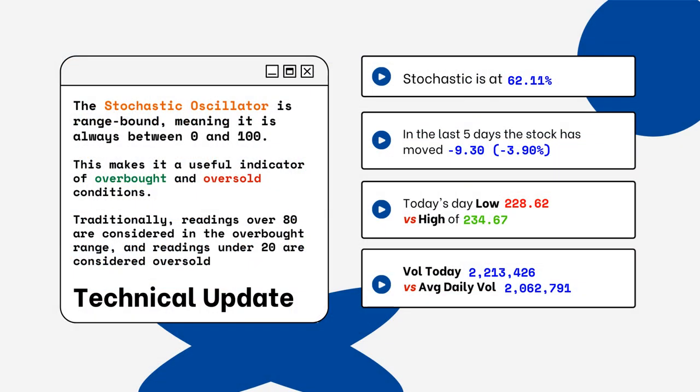You can see on the right side where the stochastic level is on this particular stock. This is only a technical update because you want to look for overbought and oversold conditions. Readings over 80% are considered overbought, and readings below 20% are considered oversold. You want to be aware of this when you're looking at a particular stock.